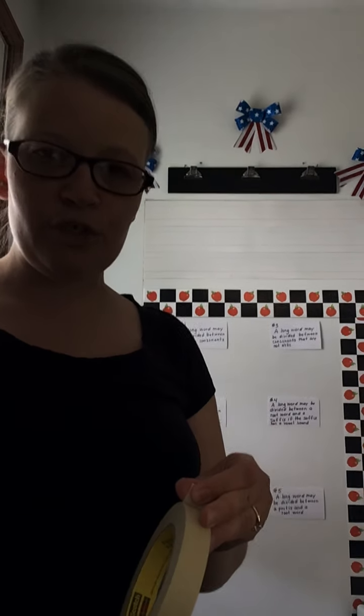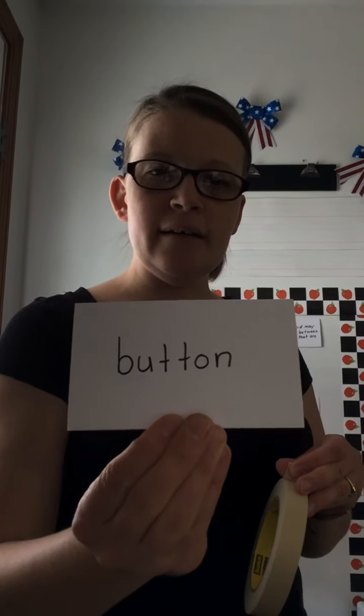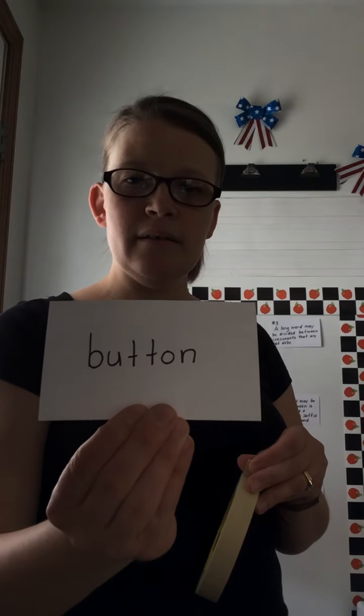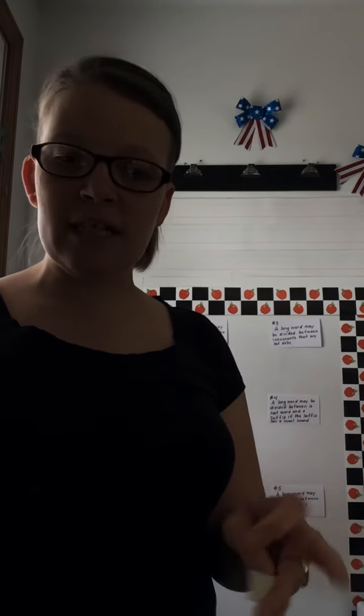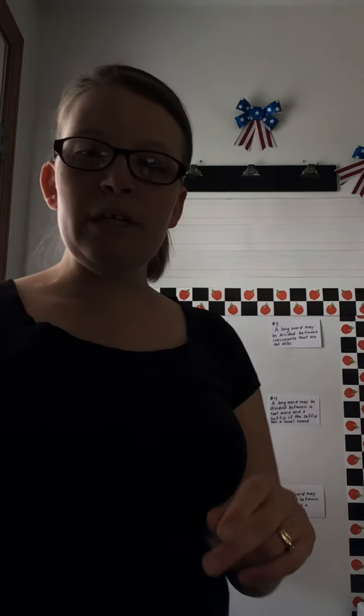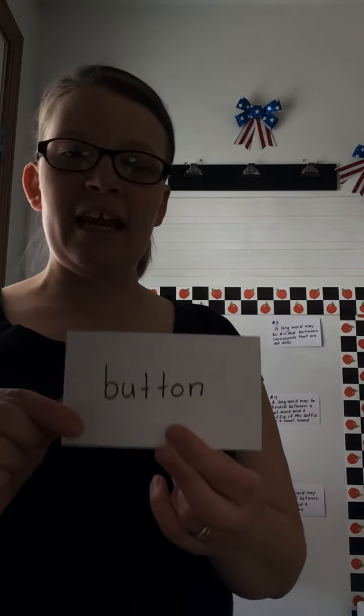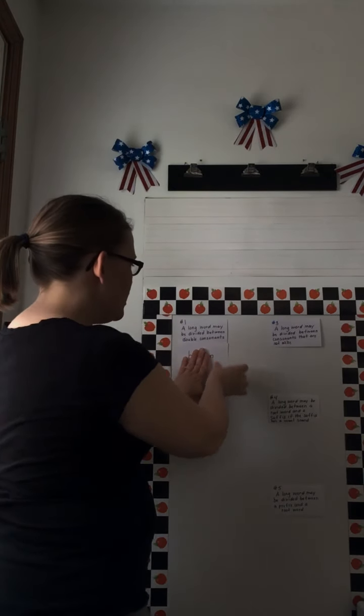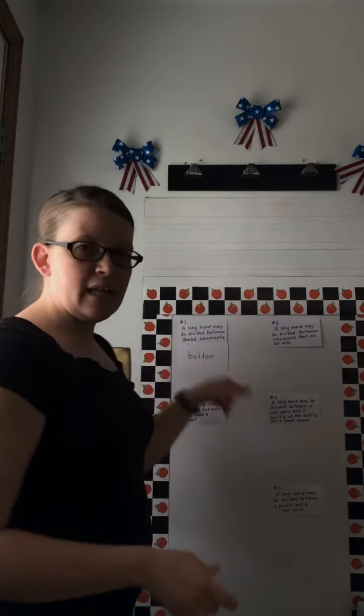My first word is 'button.' Where would I divide it, and why? It has a double consonant — B-U-T-T-O-N — and that goes with rule one. Rule one: you can divide words between double consonants.